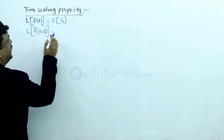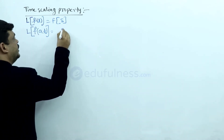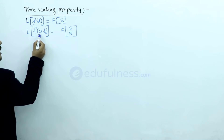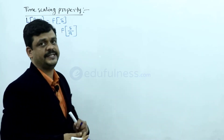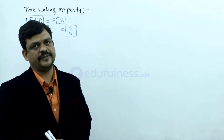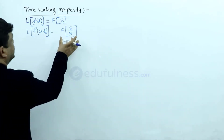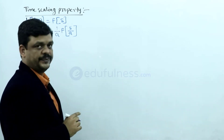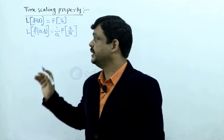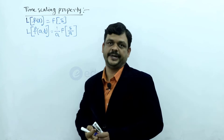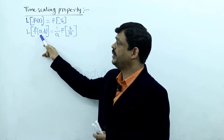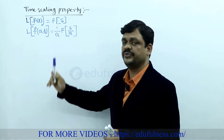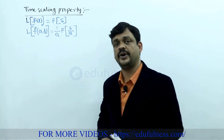Whenever some constant multiplies in time, the same constant divides with frequency, giving s/a. Because time and frequency are inversely proportional. And this complete term multiplies with a constant 1/a. So the result is (1/a) · F(s/a). This is the statement of the time scaling property: if a constant multiplies in the time domain, the same constant divides in the frequency domain, with a coefficient multiplication factor of 1/a.